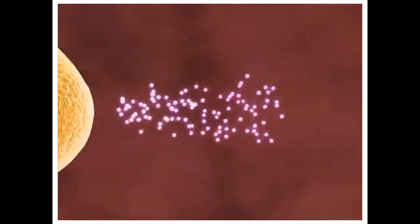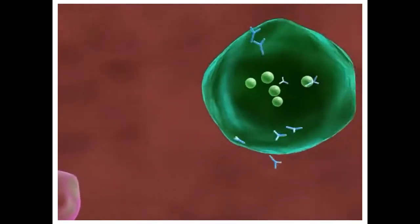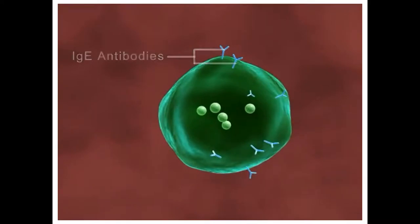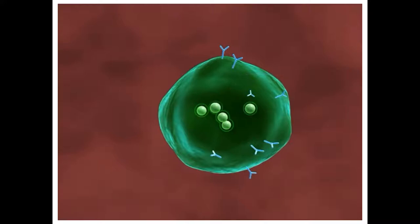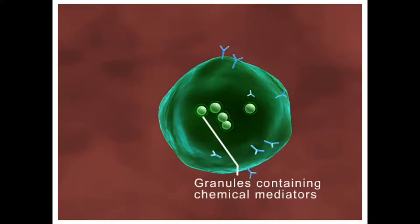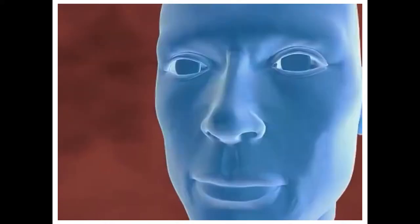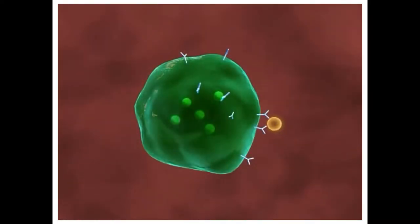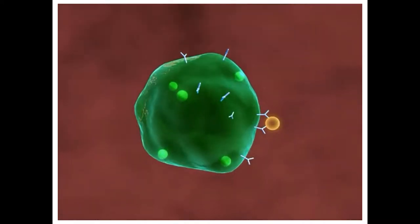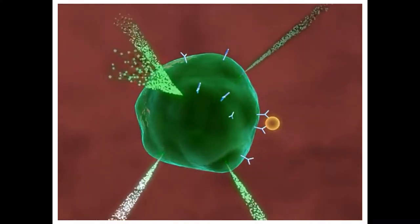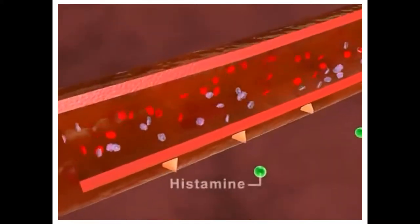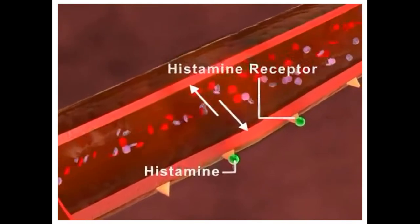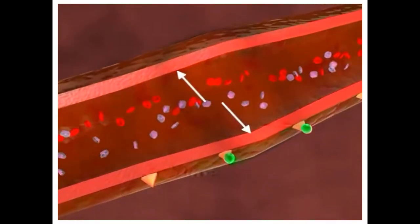These T cells activate the B cells to release substances called IgE antibodies against the allergen. These IgE antibodies sit on the surface of mast cells, which have granules containing chemical mediators like histamine and prostaglandins. On re-exposure, the allergen binds to the IgE antibodies on the mast cells, cross-linking them. This results in the release of histamine, prostaglandins, and other mediators, causing dilation of surrounding blood vessels and increased permeability — resulting in nasal stuffiness, sneezing, and mucous discharge of allergic rhinitis.